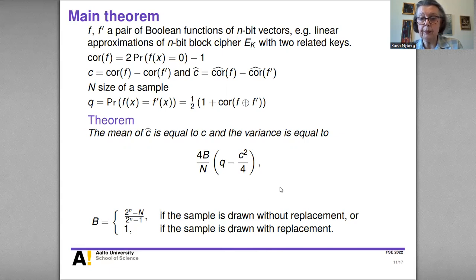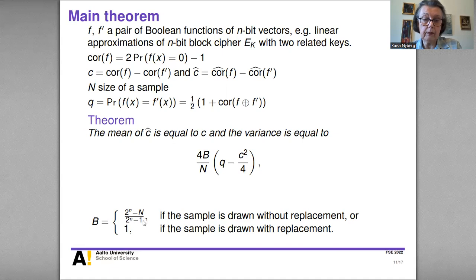If the sample is drawn without replacement, we use the hypergeometric distribution; if drawn with replacement, we use the binomial distribution. The variances in these two cases differ by the quantity (2^N minus N) times (2^N minus 1). When we multiply the variance of the binomial case by this quantity, we get the variance in the hypergeometric case.